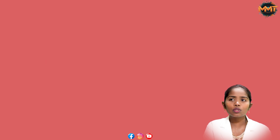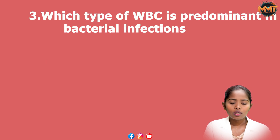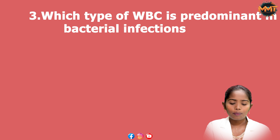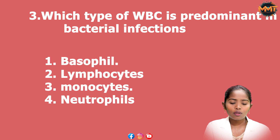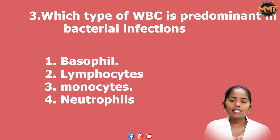Question 3: Which type of WBC is predominant in bacterial infections? Options: 1. Basophil, 2. Lymphocytes, 3. Monocytes, 4. Neutrophils. The answer is neutrophils.